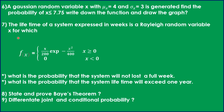The seventh question: the lifetime of a system expressed in weeks is a Rayleigh random variable X for which f(x) = (x/200) * exp(−x²/400) for x ≥ 0, and 0 for x < 0. Find: (1) the probability that the system will not last a full week, and (2) the probability that the system lifetime will exceed one year.